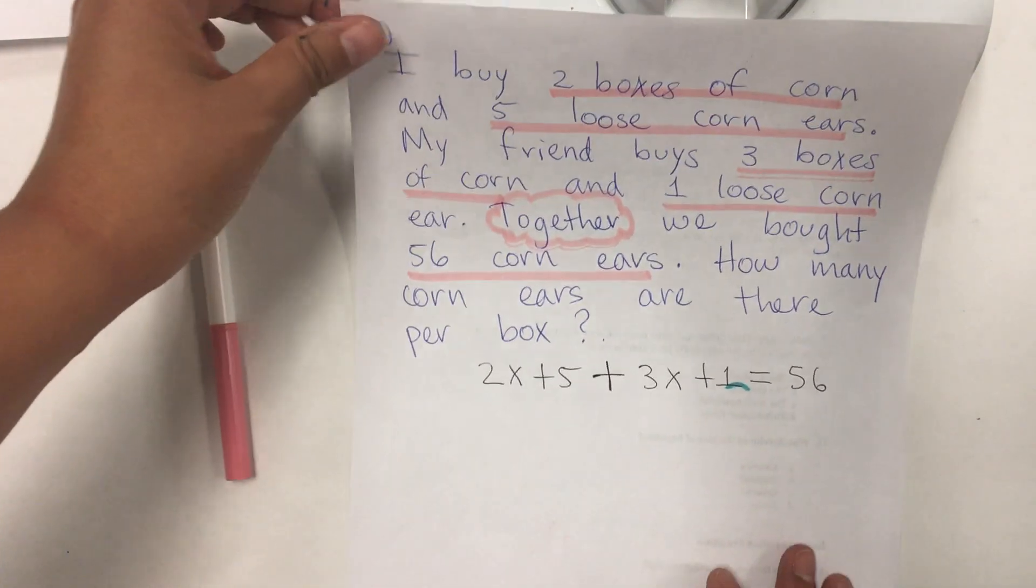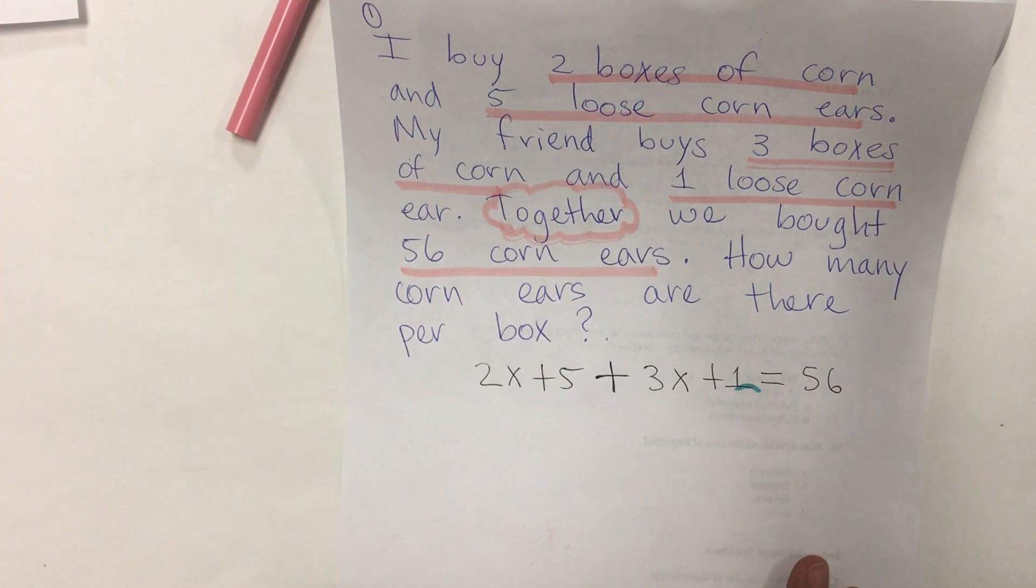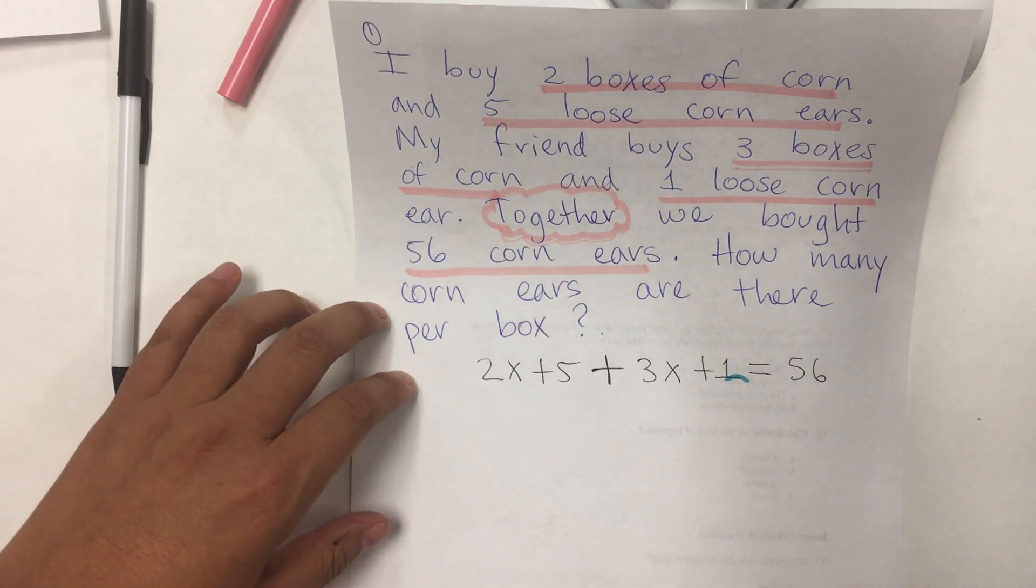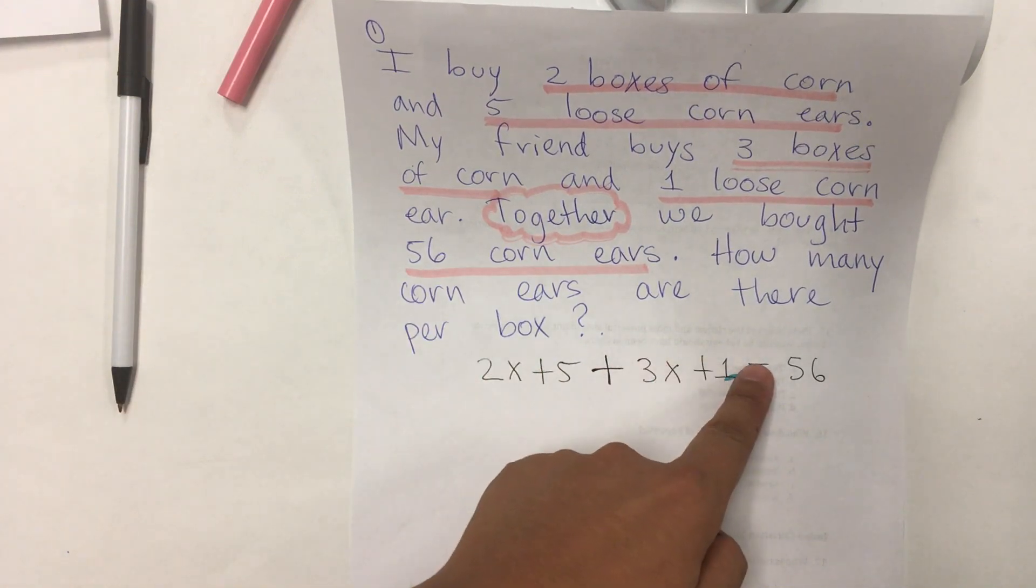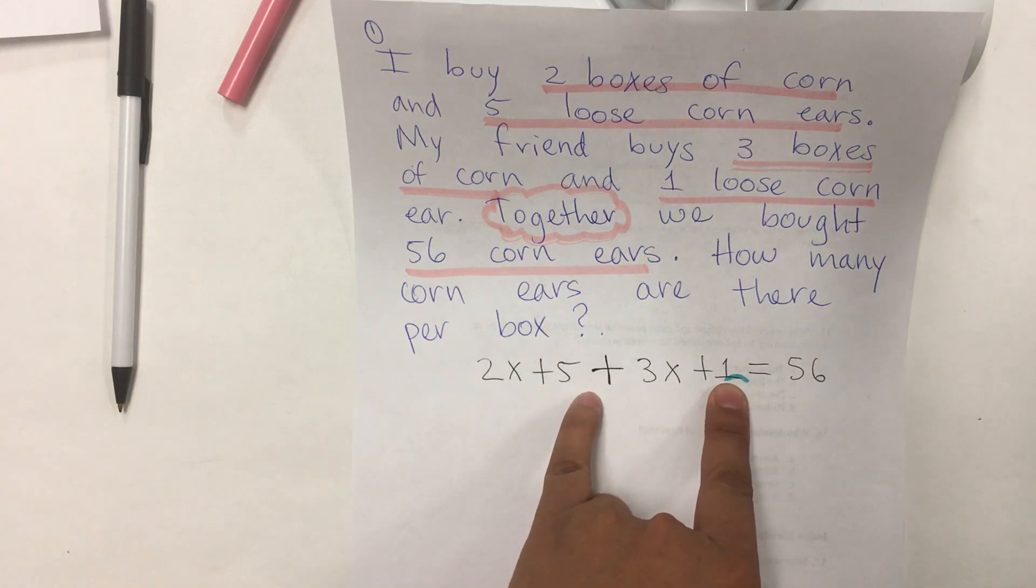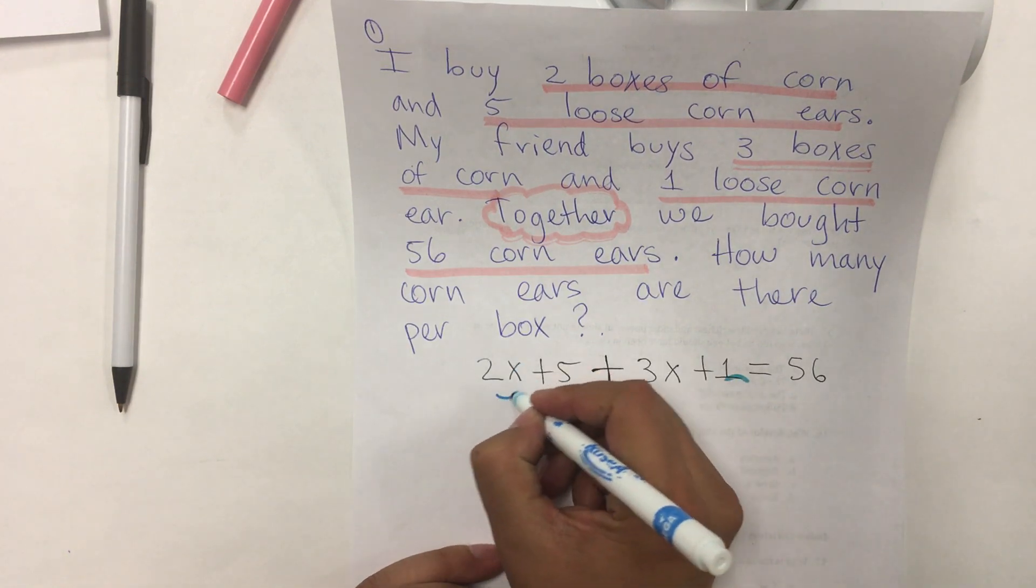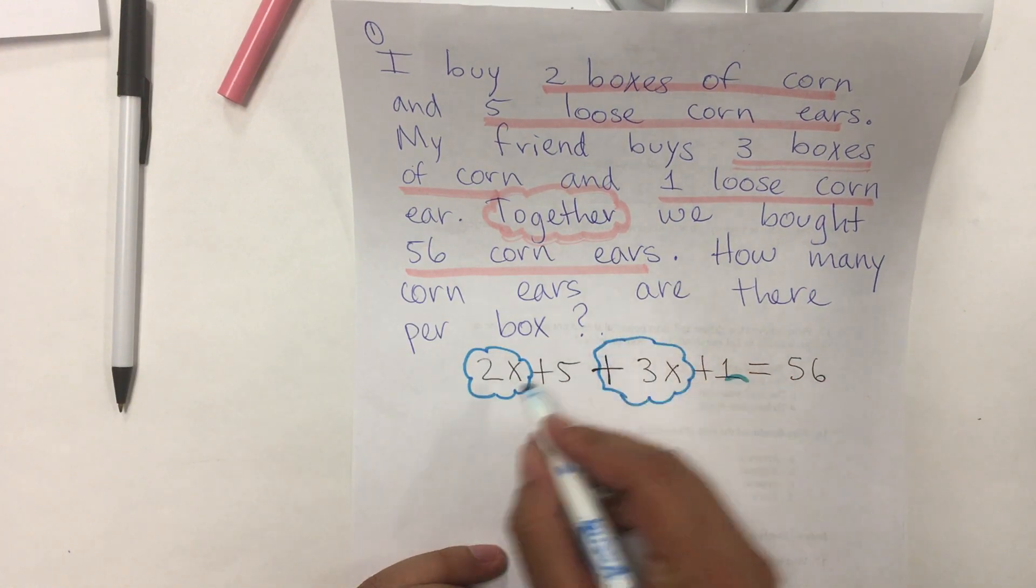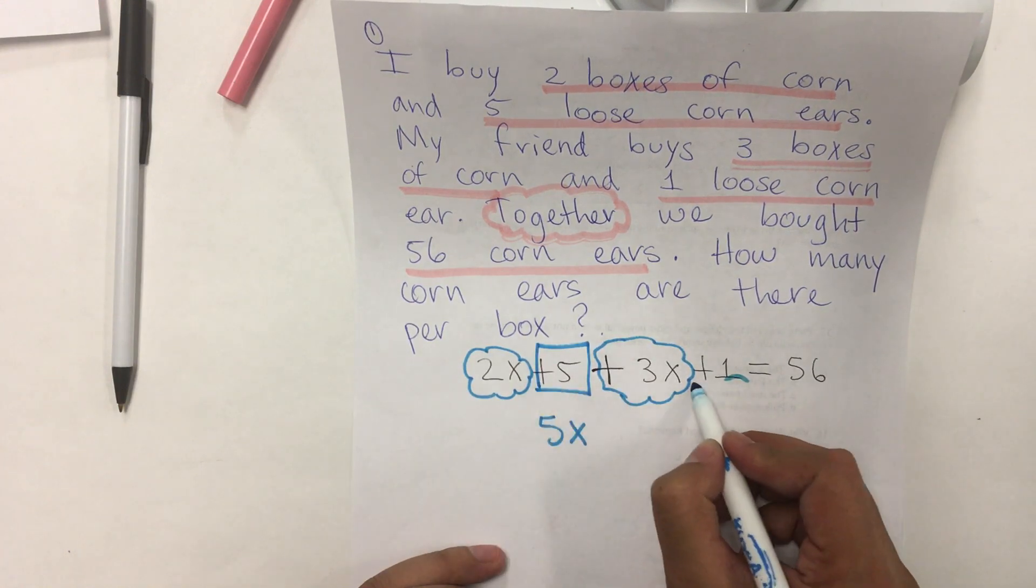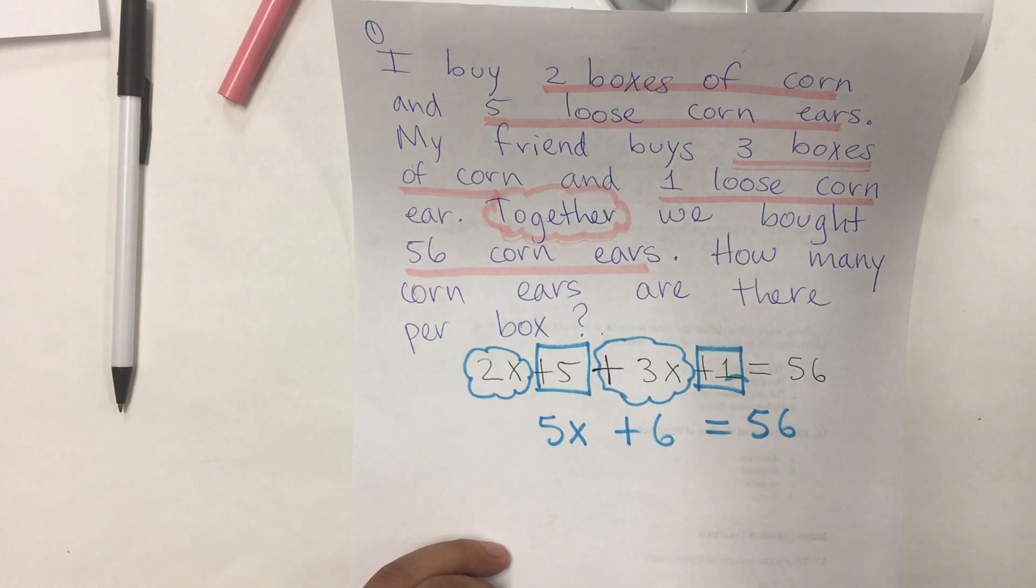So we have what they're calling combining like terms. Why? Because they are the same, on the same side of the equal sign. On this side, we have two terms with variables and two terms with no variable, meaning constant numbers. So, we're going to combine variables with variables. 2x plus 3x equals 5x. And we're going to combine 5 plus 1, which gives me 6 equals 56. So, we're combining like terms.